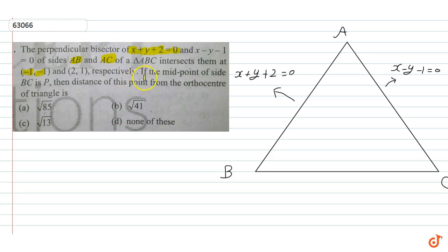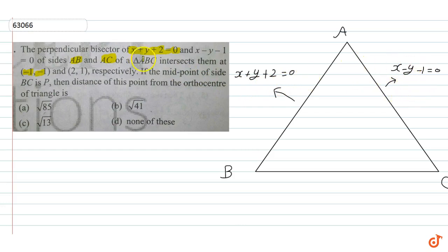If we look at the perpendicular bisectors of the two sides: side AB is x+y+2=0 and side AC is x-y-1=0. The slope of the first line is -1, and the slope of the second line is 1. Since the product of slopes is -1, angle A is 90 degrees, meaning triangle ABC is a right-angle triangle.